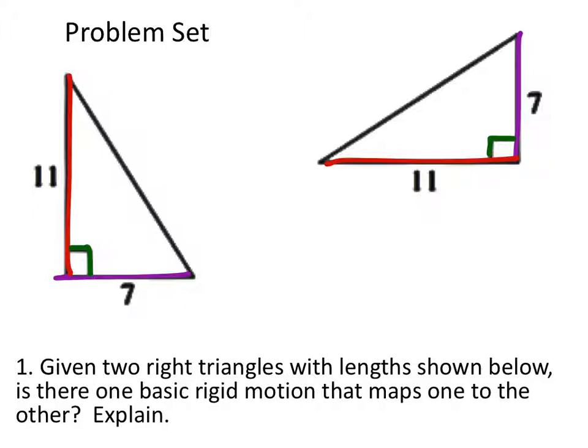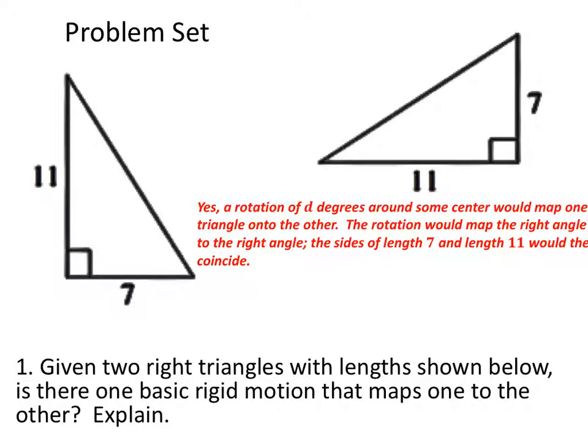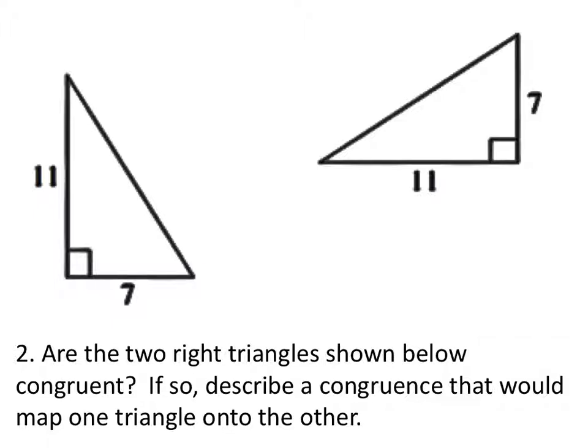So this is why we know that these two would be congruent, is because we could use one rotation to map one to the other. Are the two right triangles shown below congruent? I'll describe a congruence that would map one triangle onto the other. We just did that. Since we know that it's a rigid motion that's a rotation, we know that these two triangles are congruent.